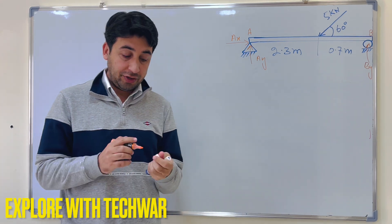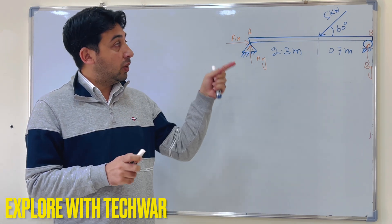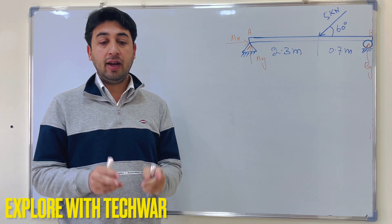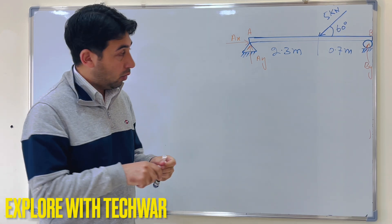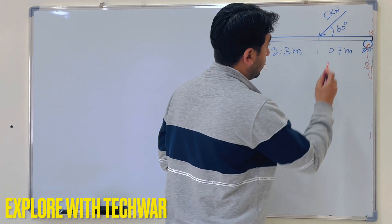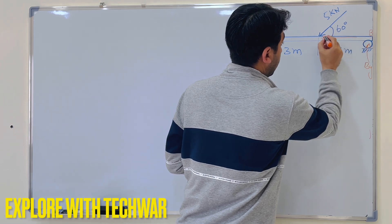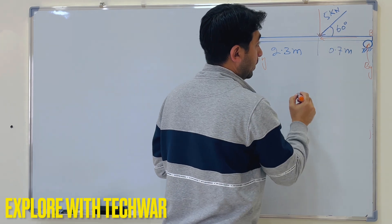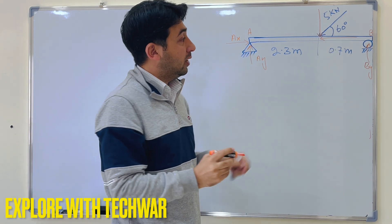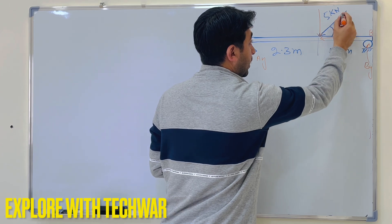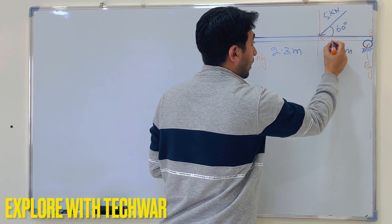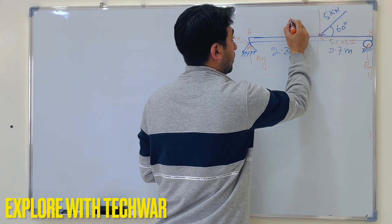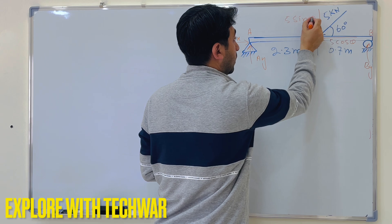For a force acting at an angle, we resolve it into its components. We find the vertical component and the horizontal component. The horizontal component will be 5 cos theta and the vertical component will be 5 sin theta.